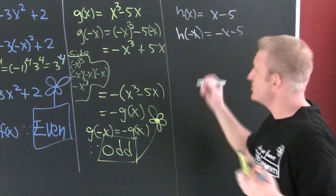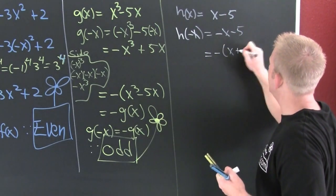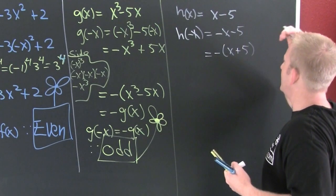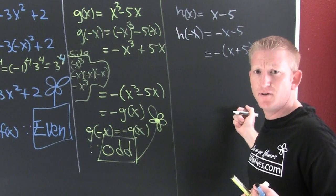Oh, boy. Maybe I want to try that same trick. Pull that minus out. This is x plus five. Oh, wait a minute. It's not the original. Is this one either an even or an odd?